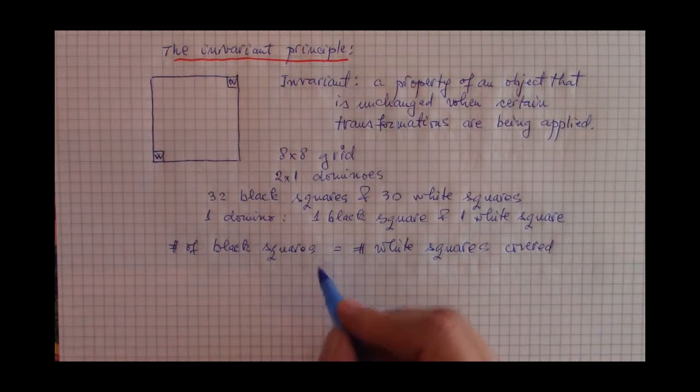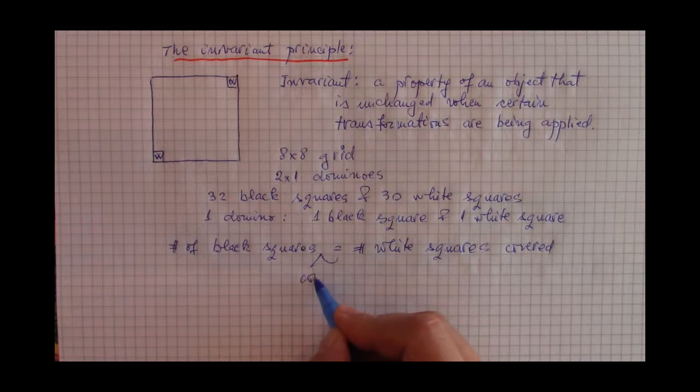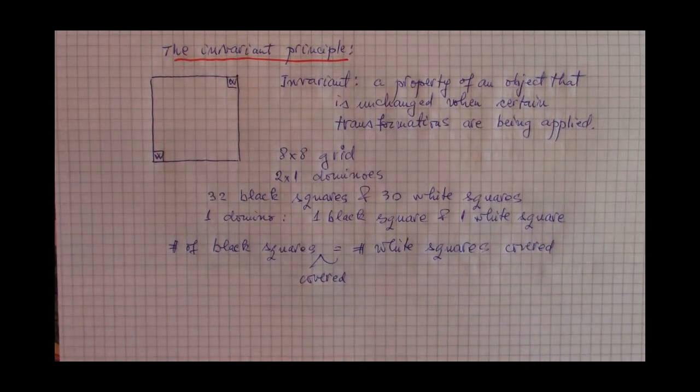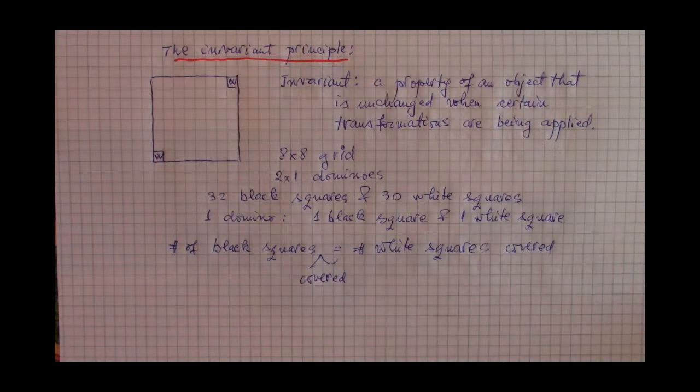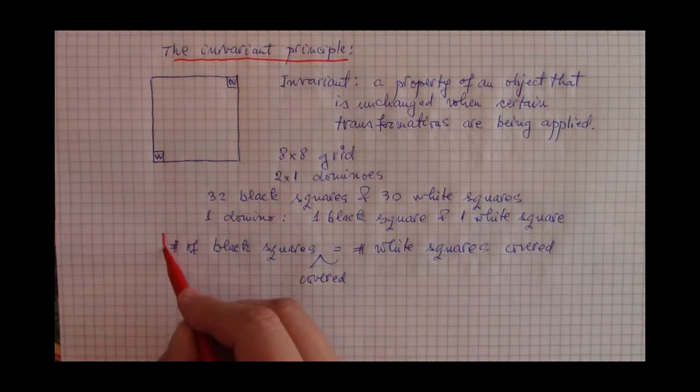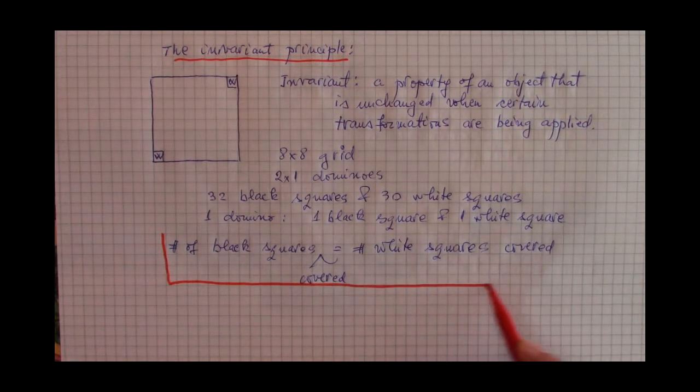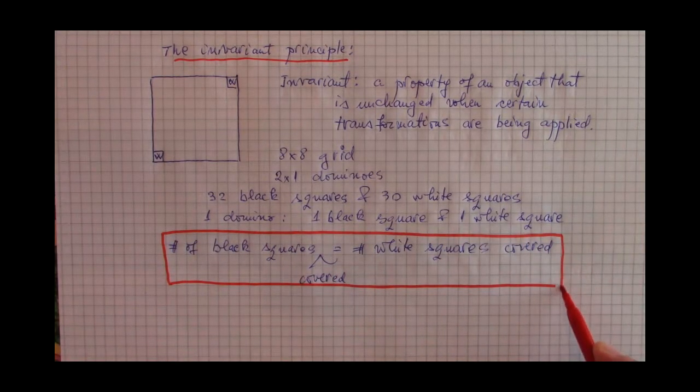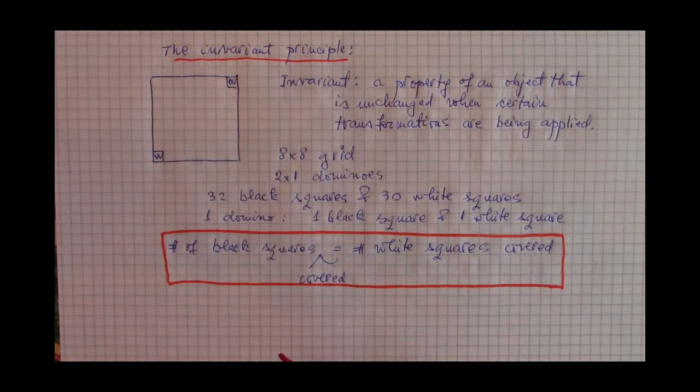So the number of black squares covered equals the number of white squares covered. This is a crucial property of any placement of dominoes in this shape if there is no overlapping.